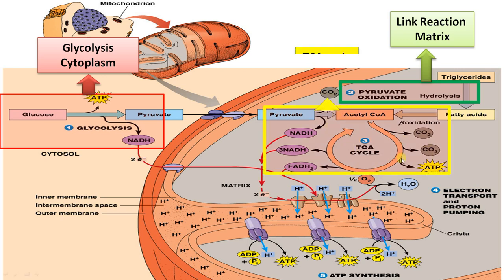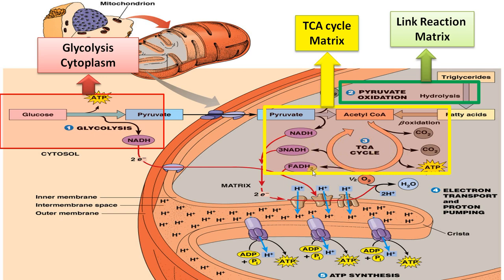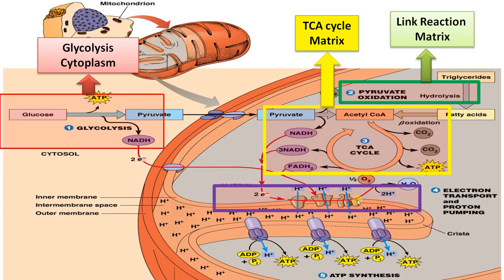The site of the Krebs cycle — also called the TCA cycle or citric acid cycle — is also the matrix. From the Krebs cycle, NADH, FADH2, and a small amount of ATP are synthesized. This reduced NADH and FADH2 then enters the electron transport chain.